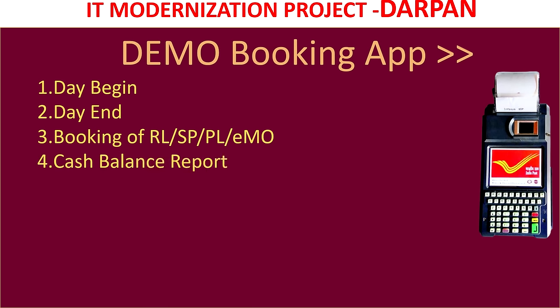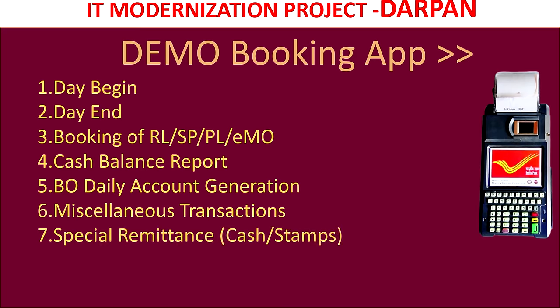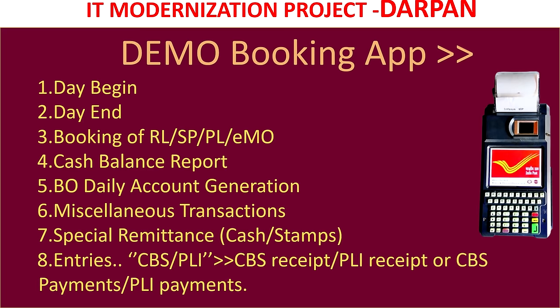Cash balance report can also be generated by accessing the demo booking app, and the BO daily account generation is also made through the demo booking app. There is an option menu called BO daily account generation. Miscellaneous transactions can also be done through the demo booking app, and special remittance requests can be made by the branch office for cash and stamps to the sub-office through this demo booking app. CBS and PLI transaction entries - their totals - are also entered in the demo booking app under CBS or PLI receipts or payments.